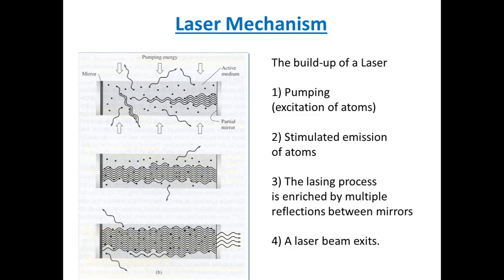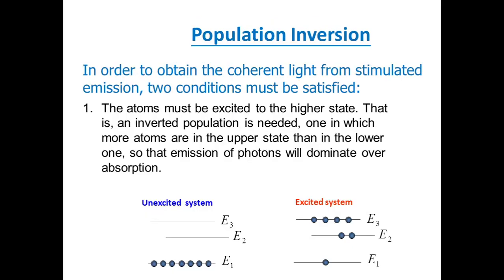In order to obtain coherent light from stimulated emission, two conditions must be satisfied. The first is that the atoms or electrons must be in the excited state or the highest state — that is, a population inversion is needed. Generally, at equilibrium or the stable situation, electrons will be in the ground state, and when external energy is applied they go into the excited state, achieving population inversion.